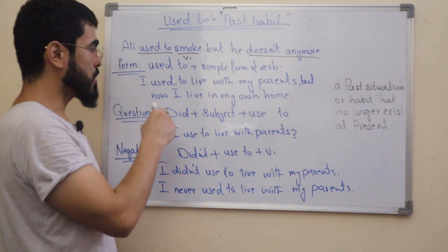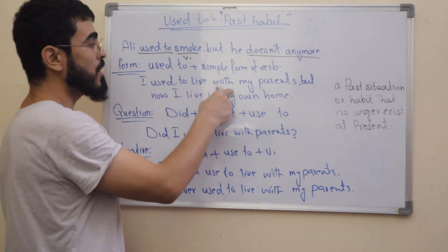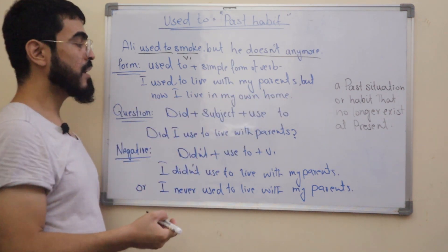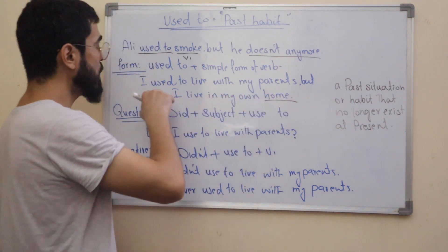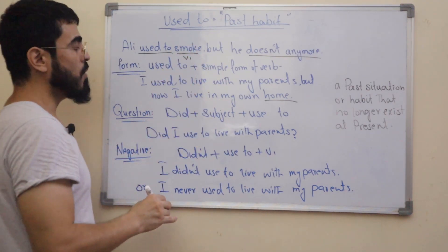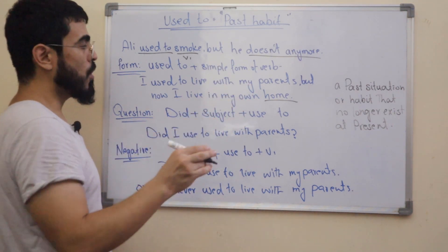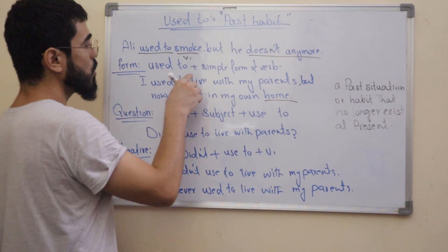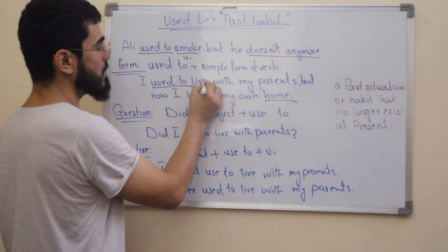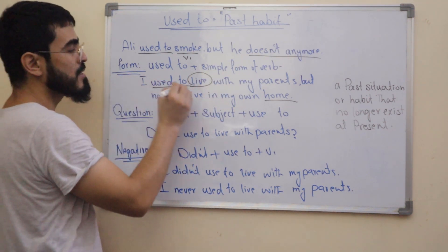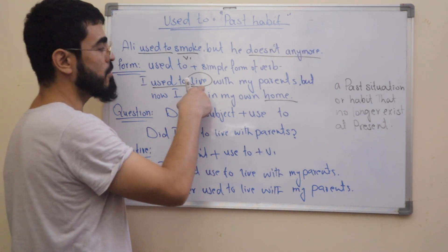So what forms do we use? We use 'used to' plus the simple form of the verb. For example: 'I used to live with my parents but now I live in my own home.' In the past, I used to live — this is my past habit. We use 'used to' plus the simple form of the verb, meaning a verb without a suffix like -ed, -ing, or -s/-es. This is called the simple form of the verb, or verb 1.